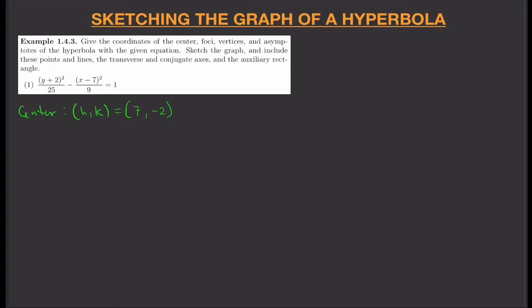Next, we find the foci, but first we need the values of a and b. Since a² = 25, we get a = 5. Since b² = 9, we get b = 3. To solve for c, we use the formula c² = a² + b², so c² = 25 + 9 = 34.